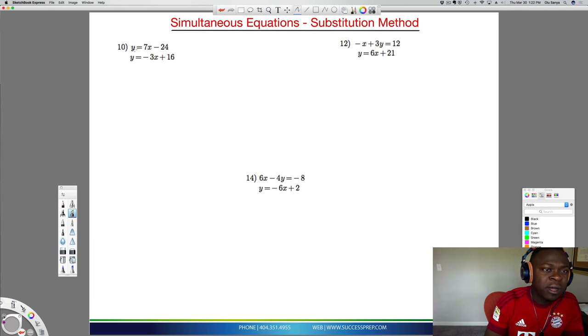If you look at number 10 here, you have y equal to 7x minus 24, and then you have y equal to minus 3x plus 16. Notice that you have y equal to two different things. So that means you can go ahead and just make those two things equal to each other. So I'm going to say 7x minus 24 equal to minus 3x plus 16.